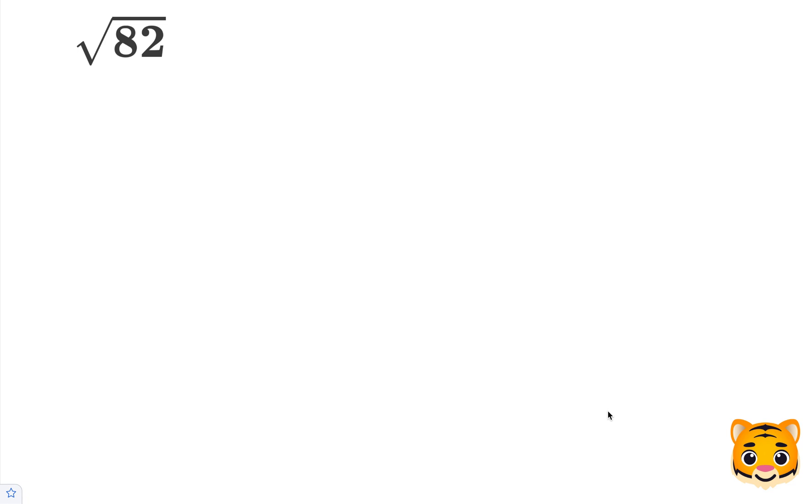In this example, we'll be approximating the square root of 82 to the nearest tenth place value. To do this, we need to look at the perfect squares nearby to 82.